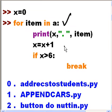Print x, that's the number here, then a period, and then the name of the item, the name of the file in the directory. Then take x and increment it by one. If it's greater than six, break out of this for loop.